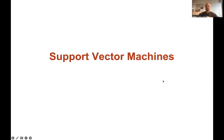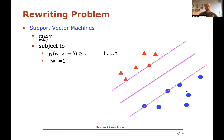Hi, and welcome to this next video on support vector machines. This is the second video on support vector machines. We'll take the formulation that we arrived at in the previous video, and then we'll try to rewrite it into a more convenient optimization problem. The problem that we looked at before was that we wrote down this optimization problem where what we'd like to optimize is to maximize the so-called function margin gamma.